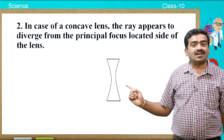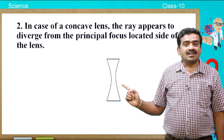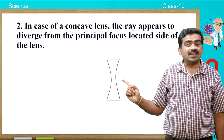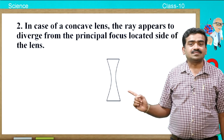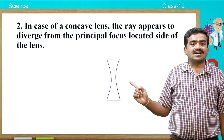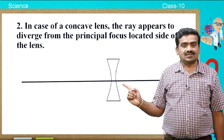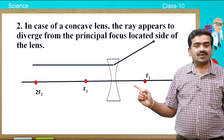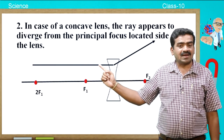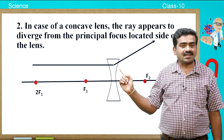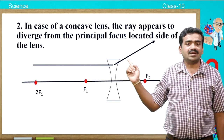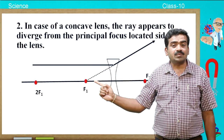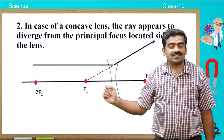In case of a concave lens, the ray of light appears to diverge from the principal focus located on the same side of the lens. So, when a ray of light passes parallel to the principal axis, after refraction it is going to be diverged and the diverged ray appears to emerge from the principal focus.